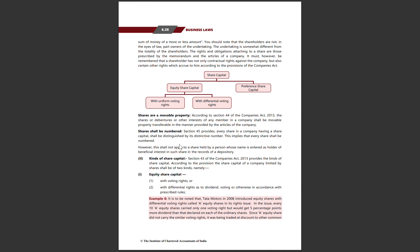Shares shall also be numbered. Section 45 provides that every share in a company having a share capital shall be distinguished by a distinctive number. This implies that every share shall be numbered. We have also studied the case of beneficial interest — a minor shareholder cannot become a shareholder directly, but their guardians can hold shares on their behalf as beneficiaries.